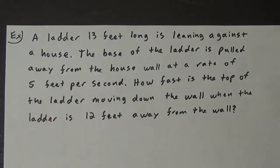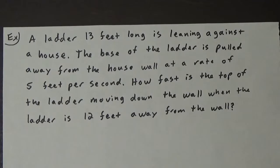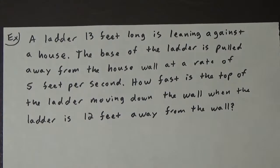In this example, a ladder 13 feet long is leaning against a house. The base of the ladder is pulled away from the house wall at a rate of five feet per second. How fast is the top of the ladder moving down the wall when the ladder is 12 feet away from the wall?